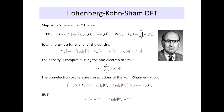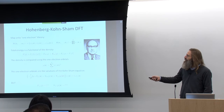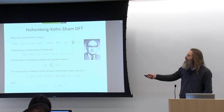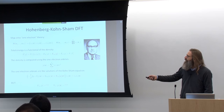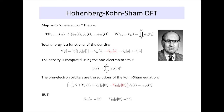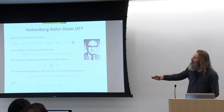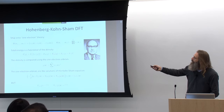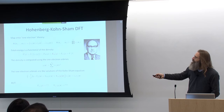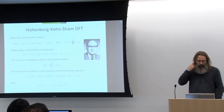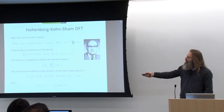Hohenberg and Kohn have shown that the total energy is a functional of the density. So we do not need this complicated many-body wave function per se to know the total energy of a system — it suffices to know the electronic density, which is a much nicer object because it depends only on one single spatial coordinate. Their density functional theory is essentially an existence proof.